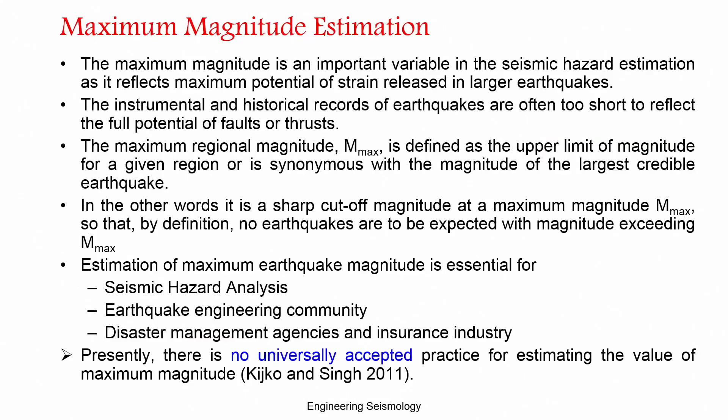Mmax is an important variable in seismic hazard estimation — it reflects the maximum potential strain energy released in large earthquakes. The instrumental and historical record of earthquakes are often too short to reflect the full potential of a fault. If you do not have proper instrumentation or documentation in historic times, you may not know what the maximum potential fault rupture was in the region.